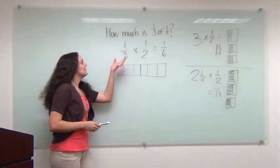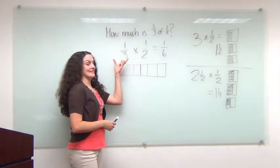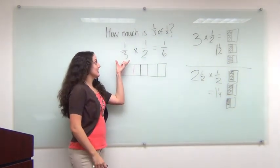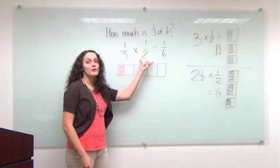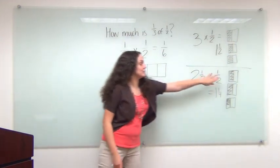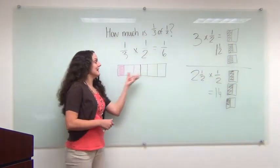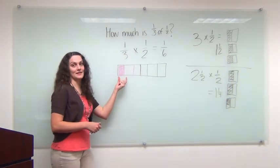So in this example, where I have a number that is less than one, I have one-third. I don't have any full copies of a half like I did over here. I have less than that. I only have a third of that half.